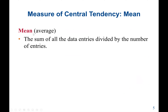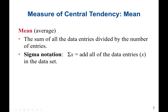We start with the mean, which is also called the average. To find the mean, it would be the sum of all the data entries divided by the number of entries. Here we have sigma notation, which represents the sum of all the data entries — the data entries are the X. To find the population mean, represented as mu, it would be the sum of all the data entries divided by the population size, represented as uppercase N.